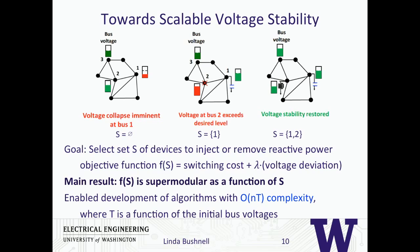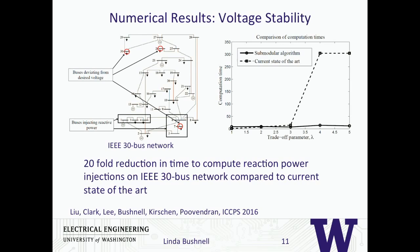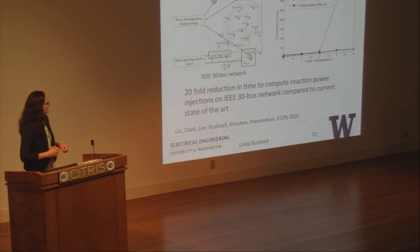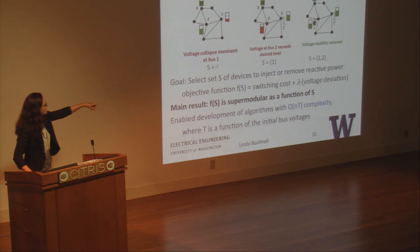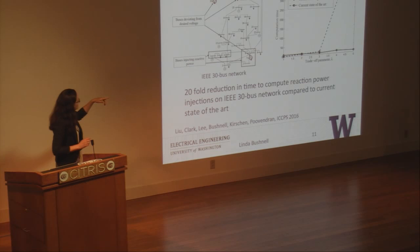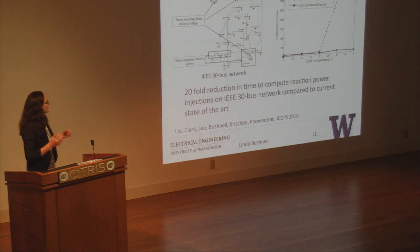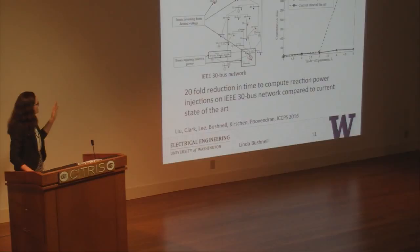Our main result here is that F of S is supermodular — meaning minus F is submodular — as a function of this input pinning set S. We can then develop algorithms with order NT complexity, where T depends on some initial values of these voltages. In the numerical study looking at the IEEE 30-bus system, we examined this trade-off parameter: as you weigh the voltage deviation more, the submodular algorithm keeps the computation time low on the right, while current methods show a huge increase in computation time because they have to look at all combinations. We can do this with a smaller set. This result was published at ICCPS this year.